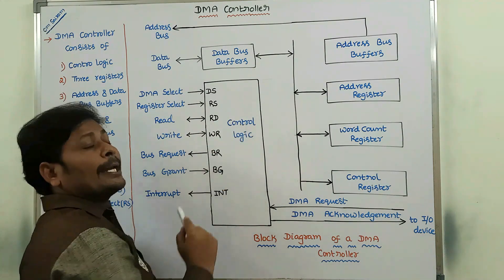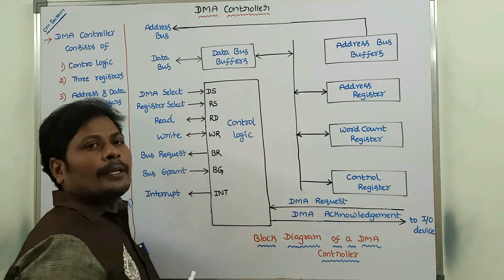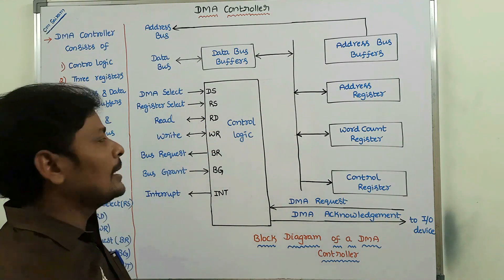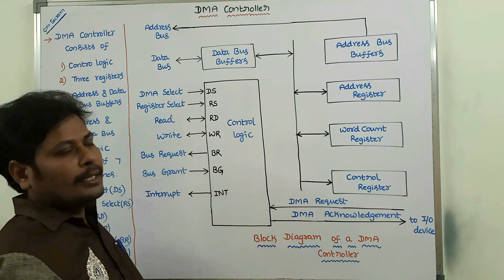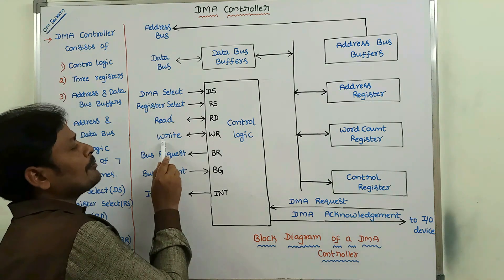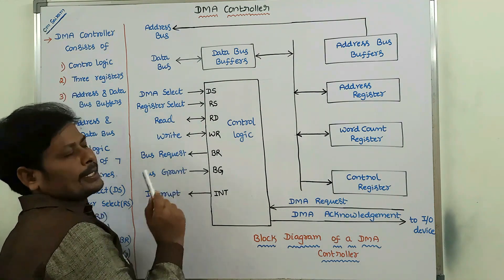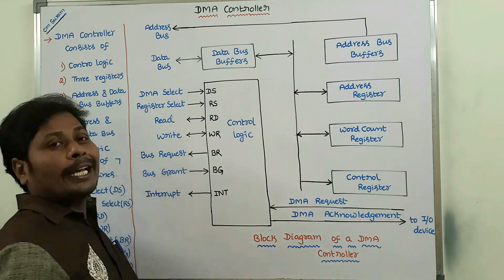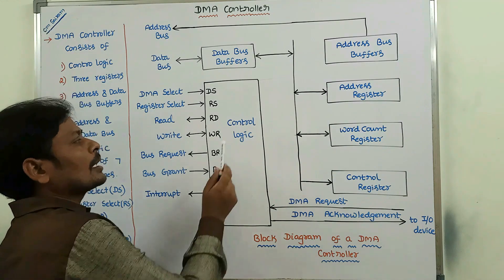The control logic provides seven control lines. The first is DMA select, represented by DS. The second is register select, represented by RS. The third is read signal, represented by RD. The fourth is write, represented by WR. The fifth and sixth are bus request and bus grant control lines. The seventh is the interrupt control line.